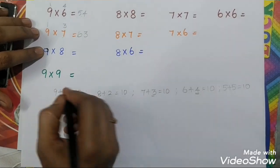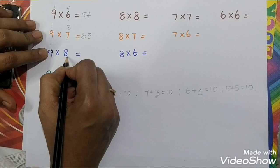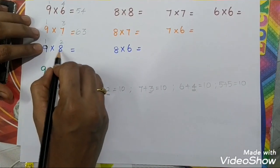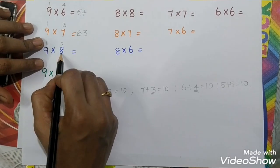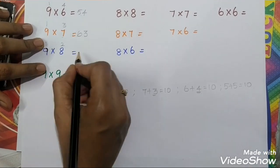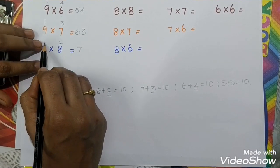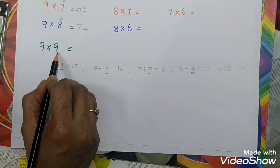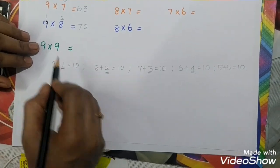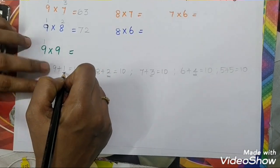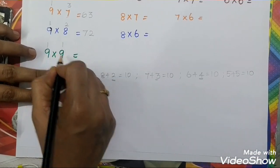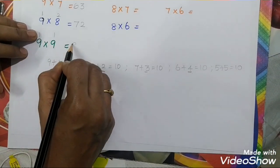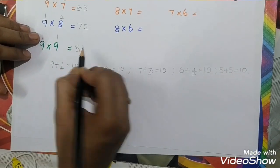For 9 times 8: 9's friend is 1, and 8's friend is 2. Cross subtraction: 8 subtract 1 equals 8 — so we get 8 in the tens place. Then 1 times 1 equals 1. Wait — 9 minus 1 equals 8, and 1 times 1 equals 1. So 9 times 9 are 81.